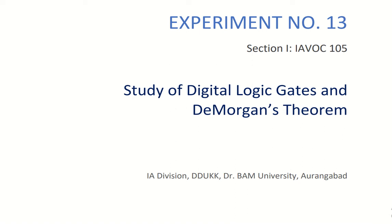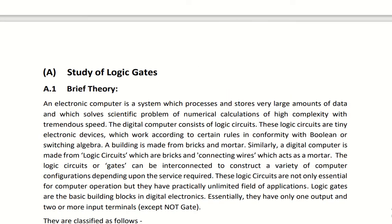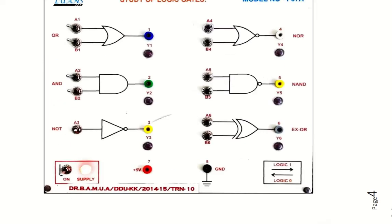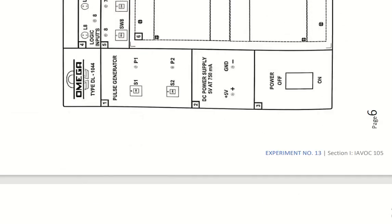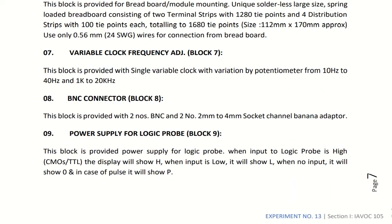Welcome back to the experimental session on various aspects of digital electronics. We are in experiment number 13 where we have to study digital logic gates and De Morgan's theorem. We have already seen the working of digital logic gates through a dedicated trainer where switches are directly connected to the logic ICs, and we verified the operation of the logic gates using the mimic diagram.